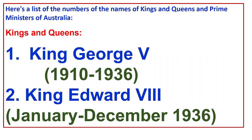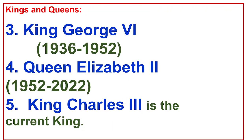Monarchs are Kings and Queens. 1. King George V from 1910 to 1936. 2. King Edward VIII from January 1936 to December 1936. 3. King George VI from 1936 to 1952. 4. Queen Elizabeth II from 1952 to 2022. 5. King Charles III is the current king.